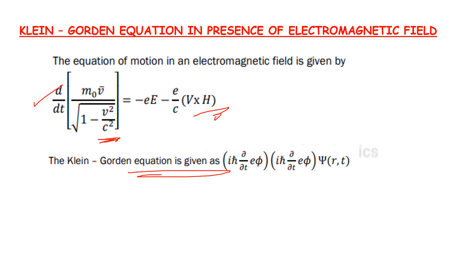The Klein-Gordon equation is given as ih cross dou by dou t e phi, ih cross dou by dou t e phi, psi of r, t.